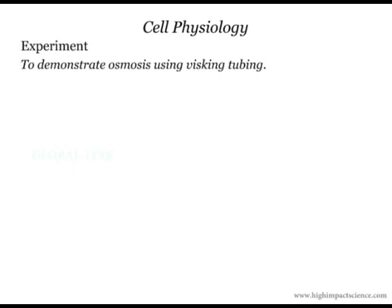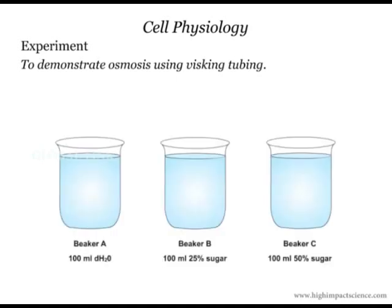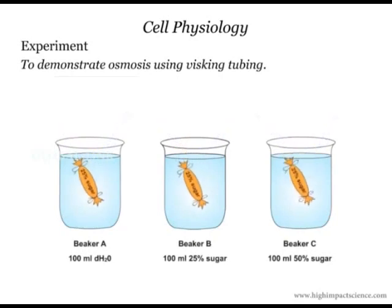Osmosis can be demonstrated using a visking tubing, which will act as a semi-permeable membrane. We take three beakers — A, B, and C. In beaker A, we put 100 ml of distilled water. In beaker B, we put 100 ml of 25% sugar solution. To each of the beakers, we put a visking tubing whose content is 25% sugar solution. We allow them some time.